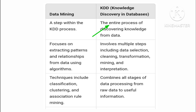KDD, on the other hand, is the entire process of discovering knowledge from data — it's the complete process of turning raw data into valuable knowledge. It includes several steps like preparing the data and finding patterns. The second difference is that data mining focuses on extracting patterns and relationships from data using algorithms, such as discovering which customers often buy certain products together.